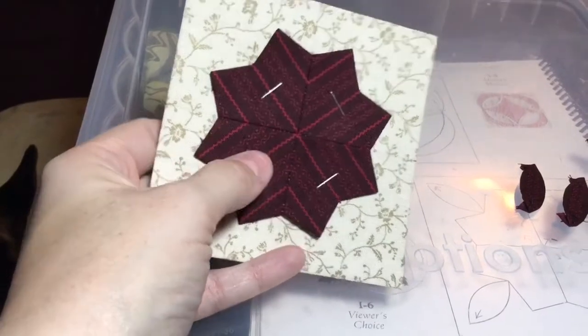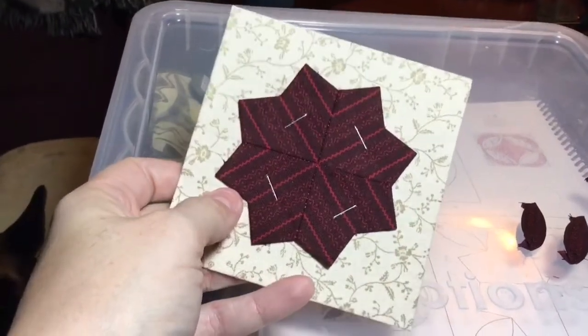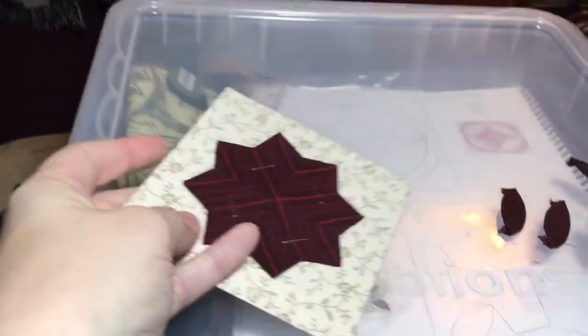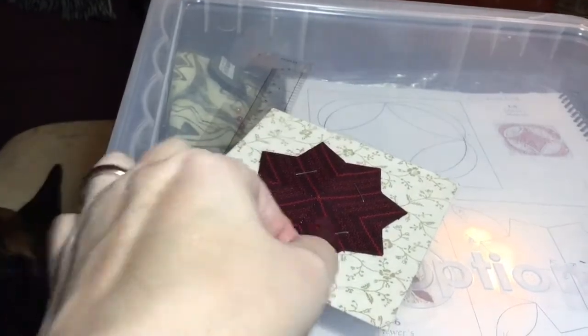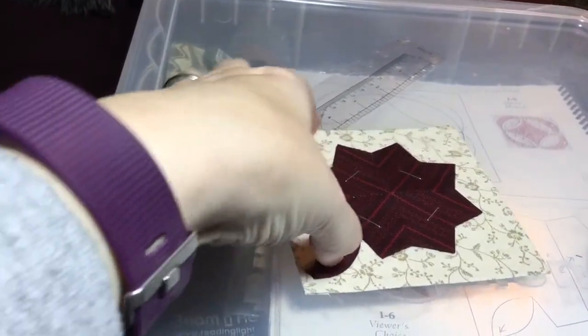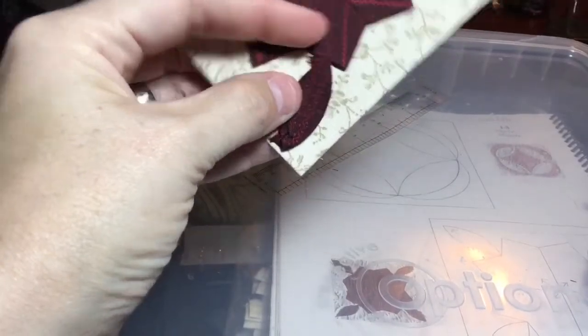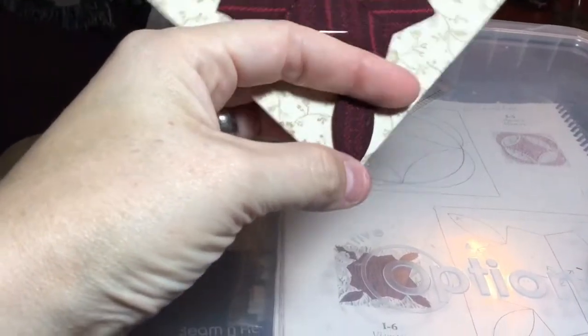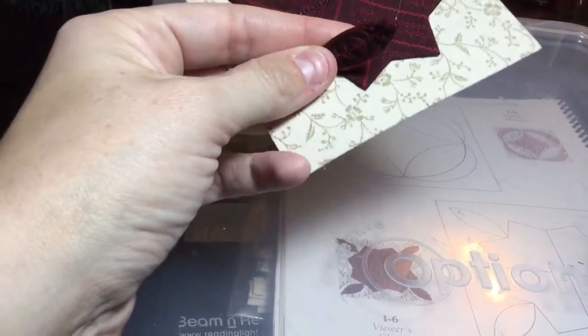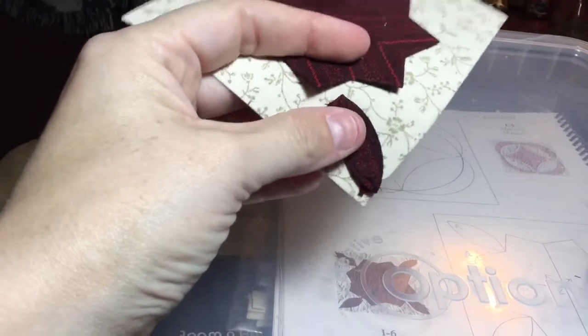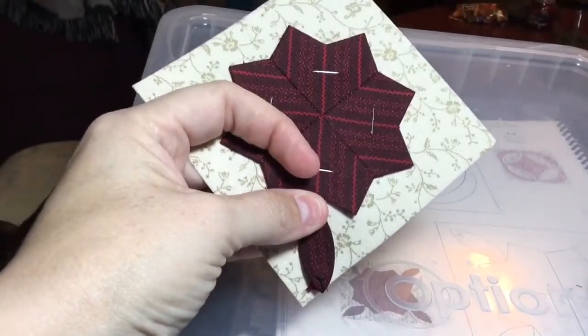So I got my center star thing stapled onto my main block, and then I'm going to take my little footballs. Those are going to go in line with one point right here on the edge and the other point on the line, on my pencil line. So my pencil line is very faint and it's right there. So I'm going to place those and staple those as well, and then I can stitch everything all at one time.